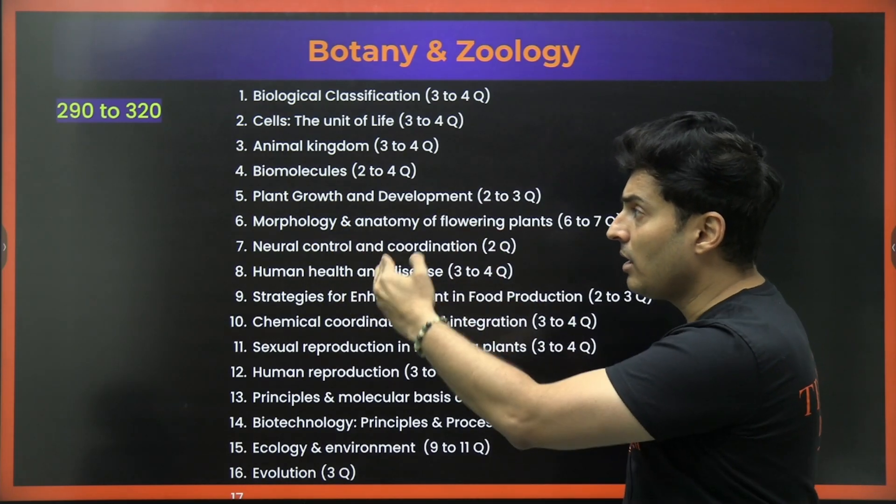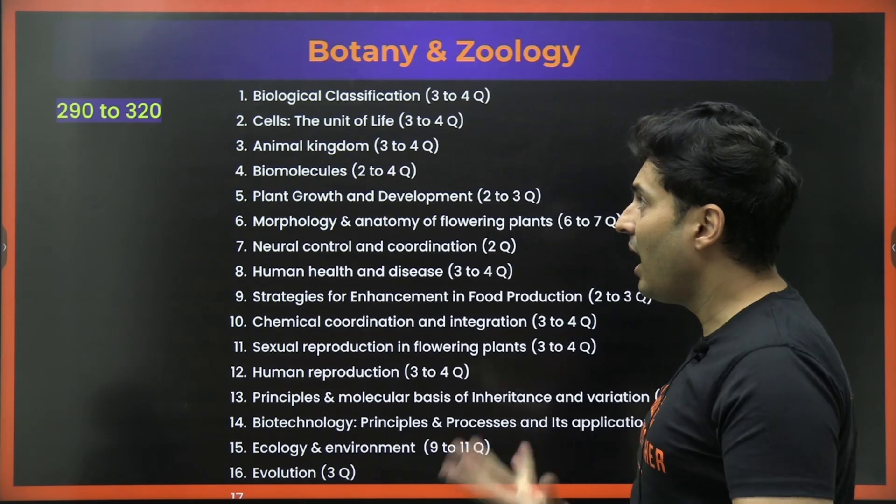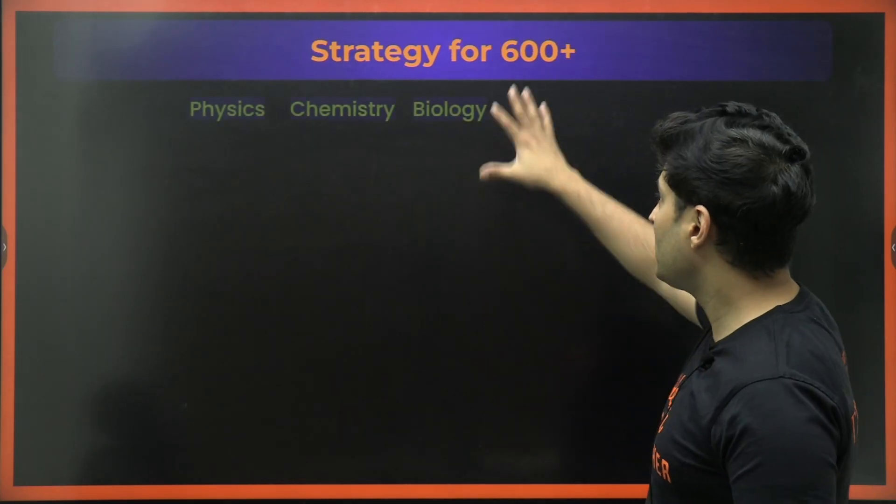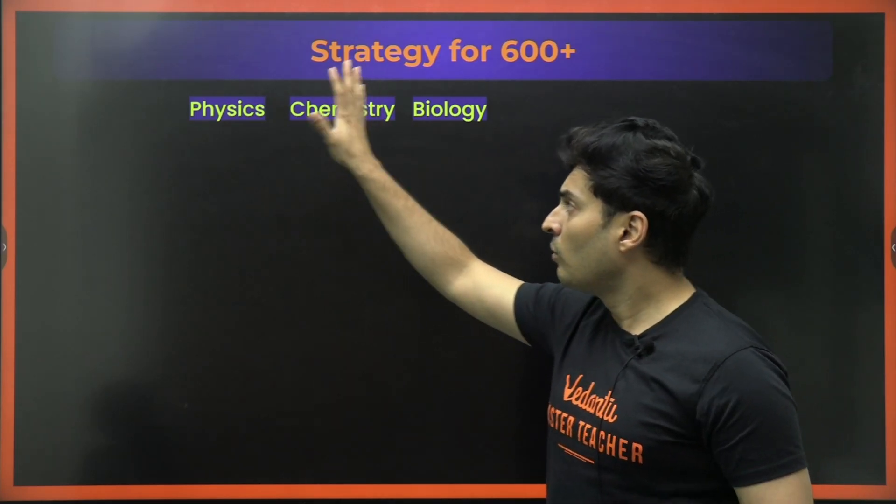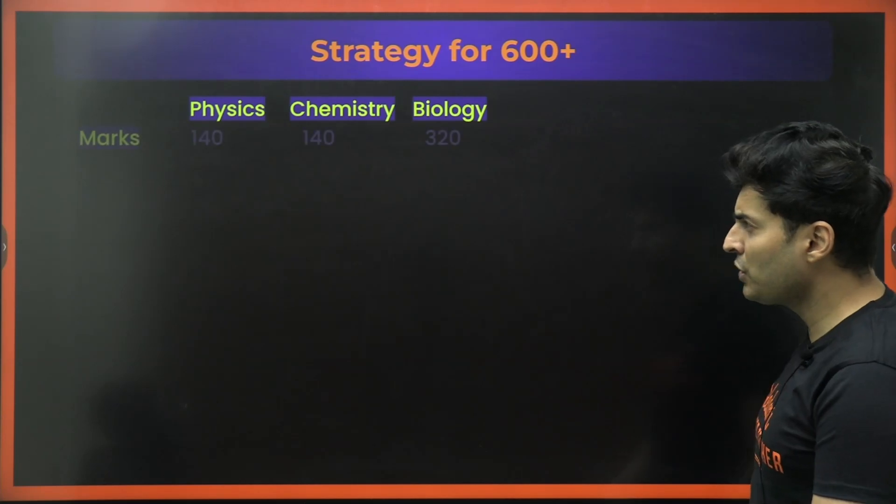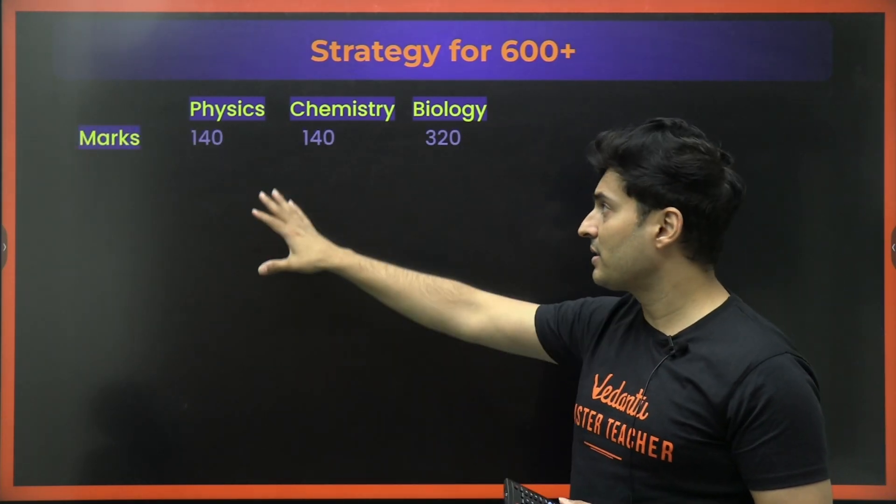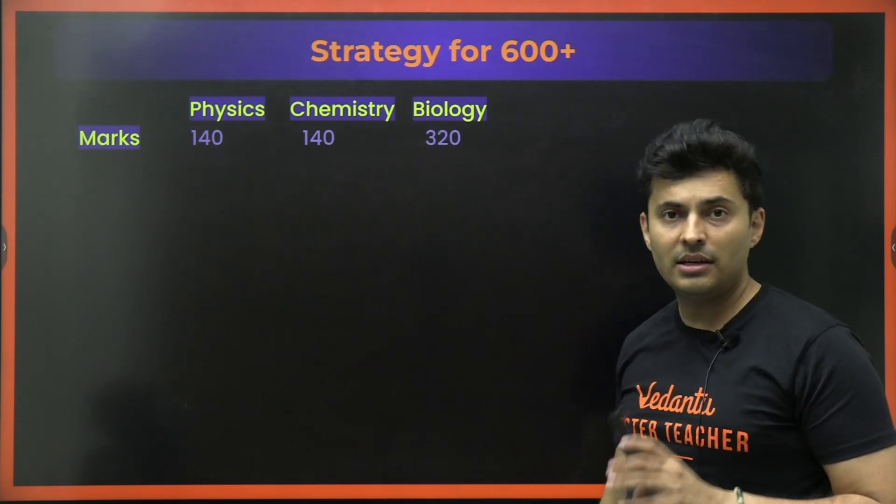Now when we talk about these particular targets in individual subjects, how exactly to achieve them? Starting off with a score of 600 plus in NEET, what should be your subject wise target and strategy be? So marks wise physics, you should get 140, chemistry 140 and biology 320.